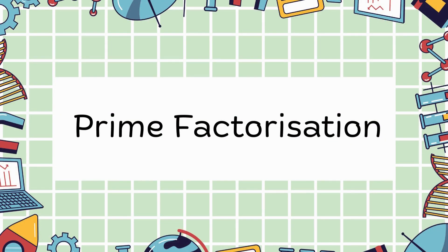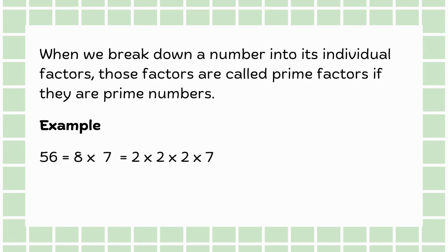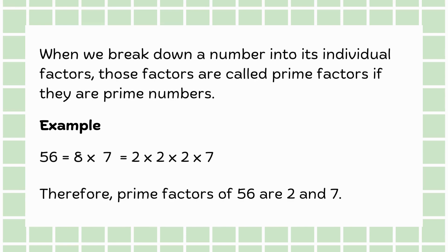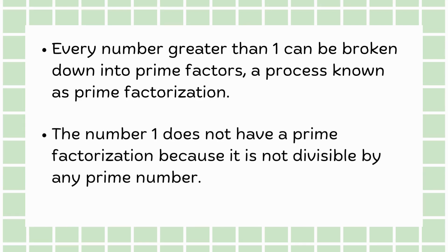Now, let's move to prime factorization. When we break down a number into its individual factors, those factors are called prime factors if they are prime numbers. For example, the number 56 can be expressed as 8 times 7, which can further be broken down into 2 times 2 times 2 times 7. Therefore, the prime factors of 56 are 2 and 7. Every number greater than 1 can be broken down into prime factors, a process known as prime factorization. However, the number 1 does not have a prime factorization because it is not divisible by any prime number.